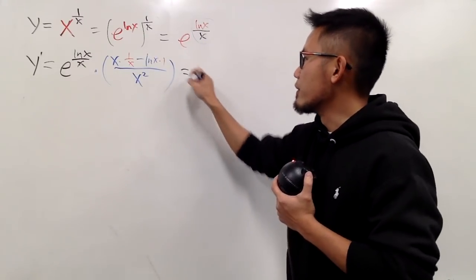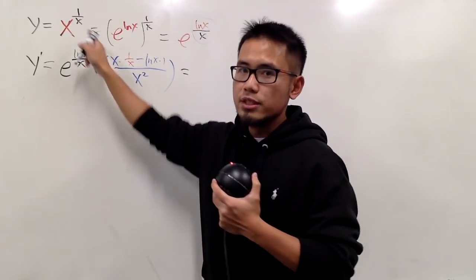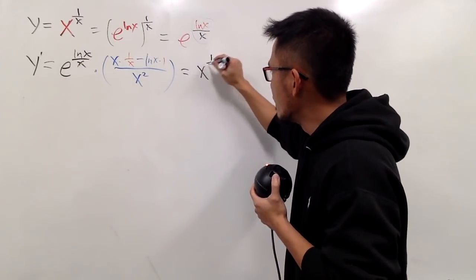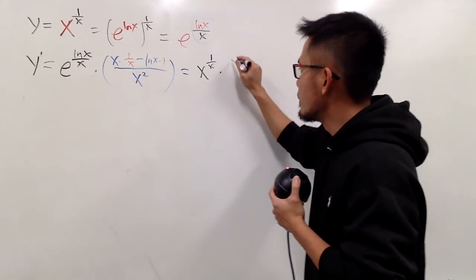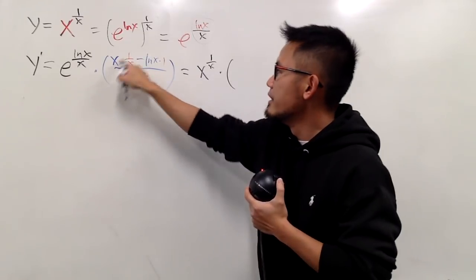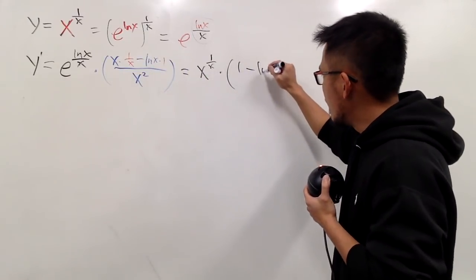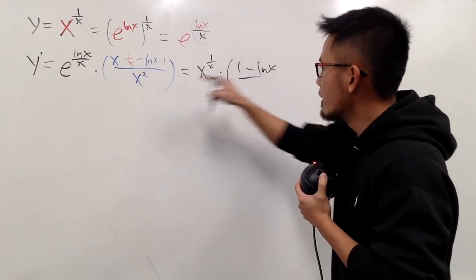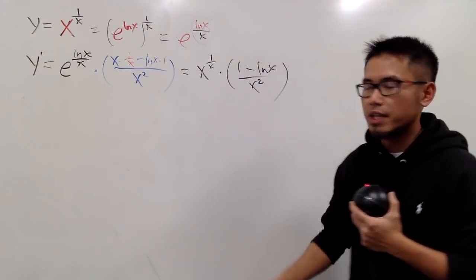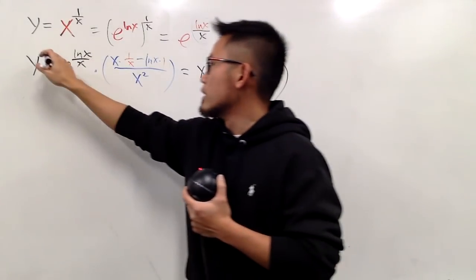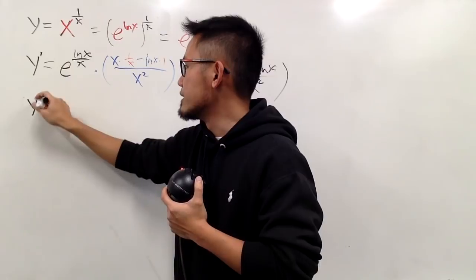Now, if you look carefully, e to the ln x over x is just the original function, namely x to the 1 over x power, times this quotient rule result. We can simplify: x times 1 over x is just 1, minus ln x, over x squared. And we are done — that's the first derivative. And of course, to get the second derivative, we just have to differentiate this again.